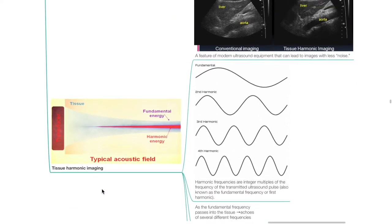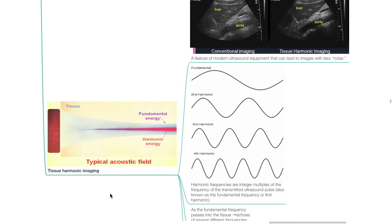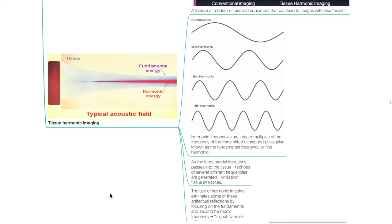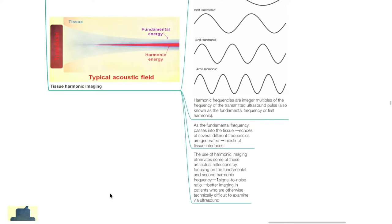Tissue harmonic imaging is a feature of modern ultrasound equipment that can lead to images with less noise. Harmonic frequencies are integer multiples of the frequency of the transmitted ultrasound pulse, also known as the fundamental frequency or first harmonic. As the fundamental frequency passes into tissue, echoes of several different frequencies are generated, producing indistinct tissue interfaces. The use of harmonic imaging eliminates some of these artifactual reflections by focusing on the fundamental and second harmonic frequency. This increases signal-to-noise ratio and enables better imaging in patients who are otherwise technically difficult to examine via ultrasound.